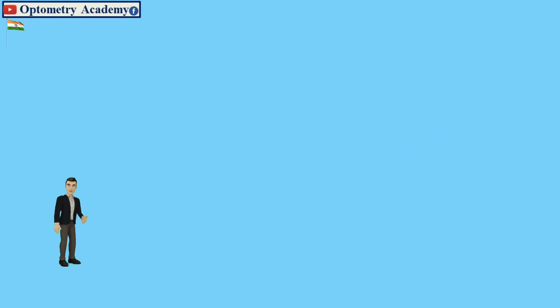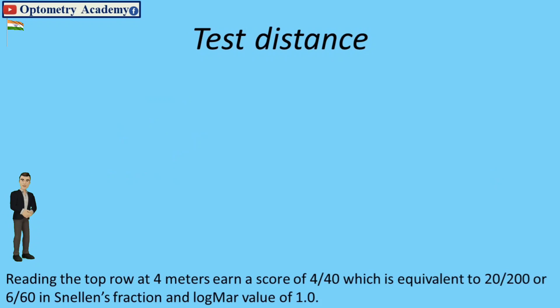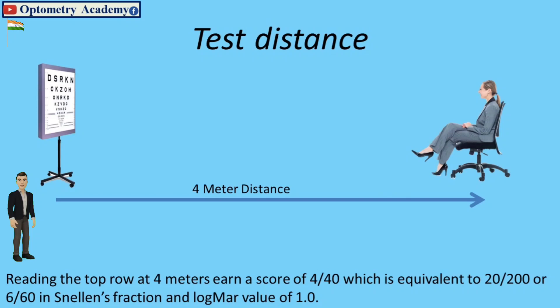Test distance: The LogMAR charts are designed for 4-meter direct distance and its letters subtend an angle of 5 minutes of arc at 40 meters. Reading the top row at 4 meters earns a score of 4 x 40 which is equivalent to 20 x 200 or 6 x 60 in Snellen's fraction and LogMAR value of 1.0.